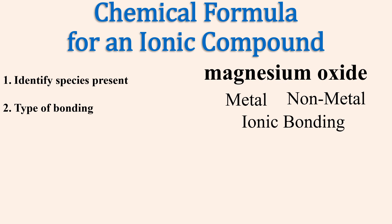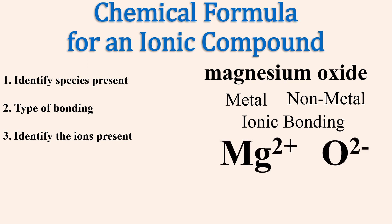Next, identify the ions present with their elemental symbols and charges. Magnesium, a cation, carries a plus 2 charge, while oxide, the anion, carries a minus 2 charge.